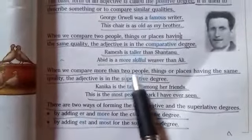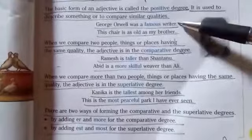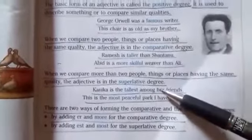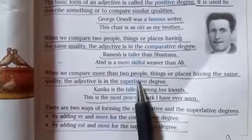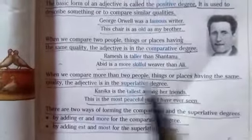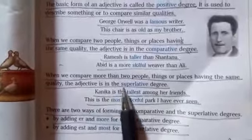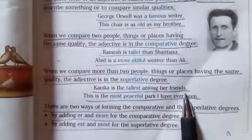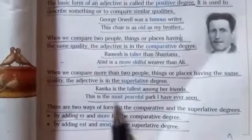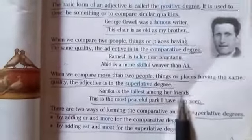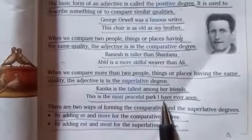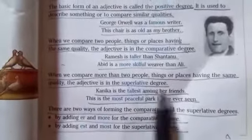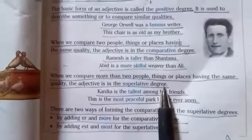When we compare more than two people, things or places having the same quality, the adjective is in the superlative degree. For example, 'Kanika is the tallest among her friends' — sari friends ke bich mein Kanika is the tallest, more than two friends are there. Next: 'This is the most beautiful park I have ever seen.' Here we use superlative degree of comparison.